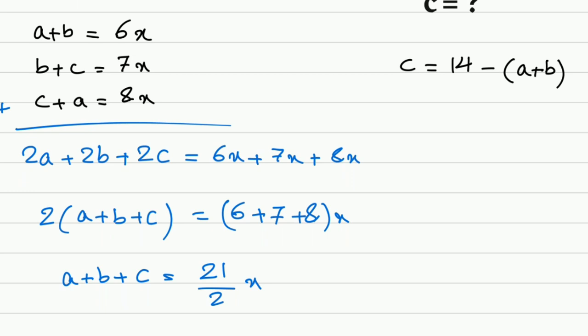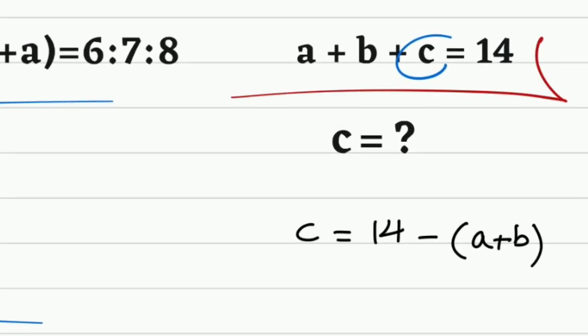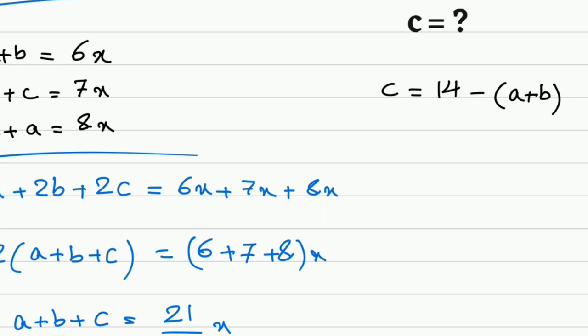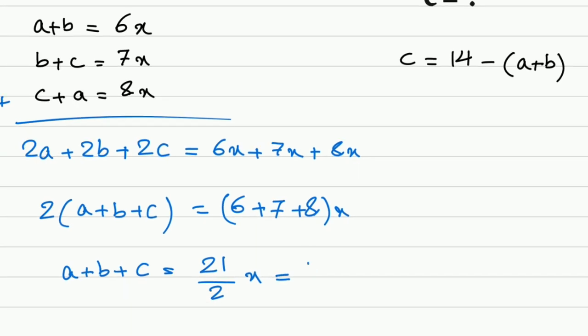And from the given equation here we know that a plus b plus c is also equal to 14. And now we can solve it for x. That's equal to 14 times 2 over 21, and that is 4 thirds.